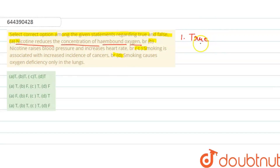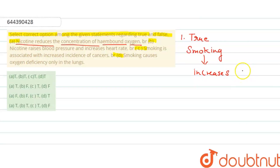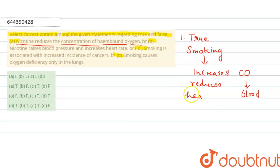Nicotine is present because of smoking, and smoking increases carbon monoxide in the blood and reduces the concentration of heme-bound oxygen. So statement A is true.